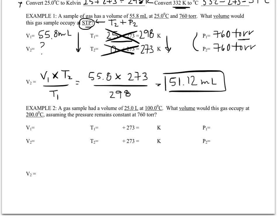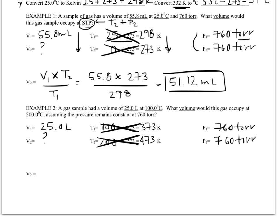Example two. The gas has a volume of 25 liters at 100 degrees Celsius. So that would be 373 Kelvin. Cross that out right away. What volume would this gas occupy? So I want to know V2 at 200 degrees Celsius. So that's 473 Kelvin. I'm going to cross out the Celsius. Assuming pressure remains constant at 760 torr.